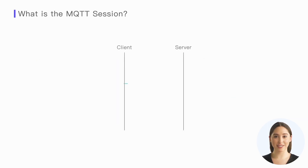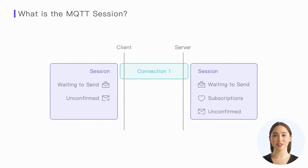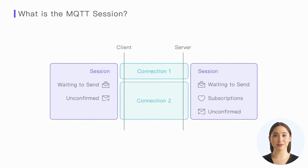And this is what the MQTT session does. Every time the client and server establish an MQTT connection, they must create a new session or resume communication from an existing session. Both the client and the server store all the state data generated within the connection in the session, including undelivered messages, the client's subscription list, and more. This allows the client and server to seamlessly resume communication in the next connection, as if the disconnection never occurred.